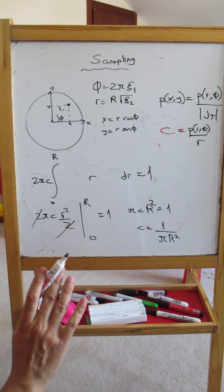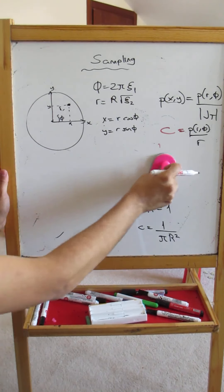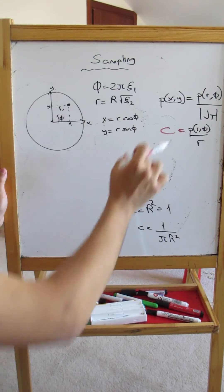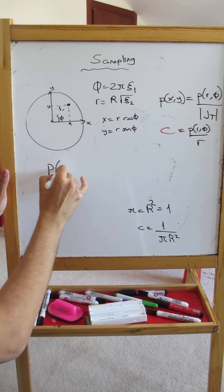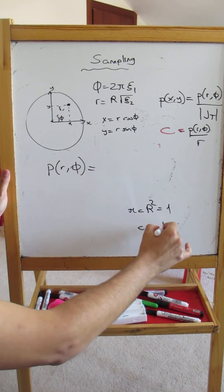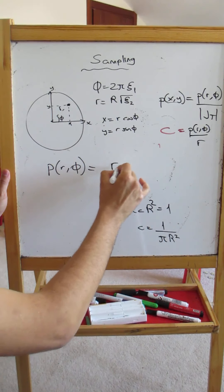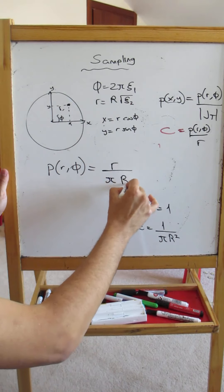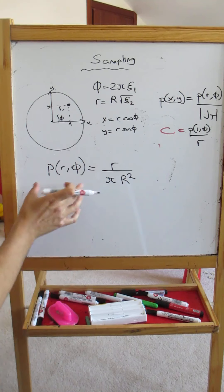Now what does it mean? We have found the following: for uniform probability in the cartesian domain, the probability in the polar domain is equal to 1/(πR²). So let's write this as follows: it equals r divided by πR². So this is the joint PDF that we must use.